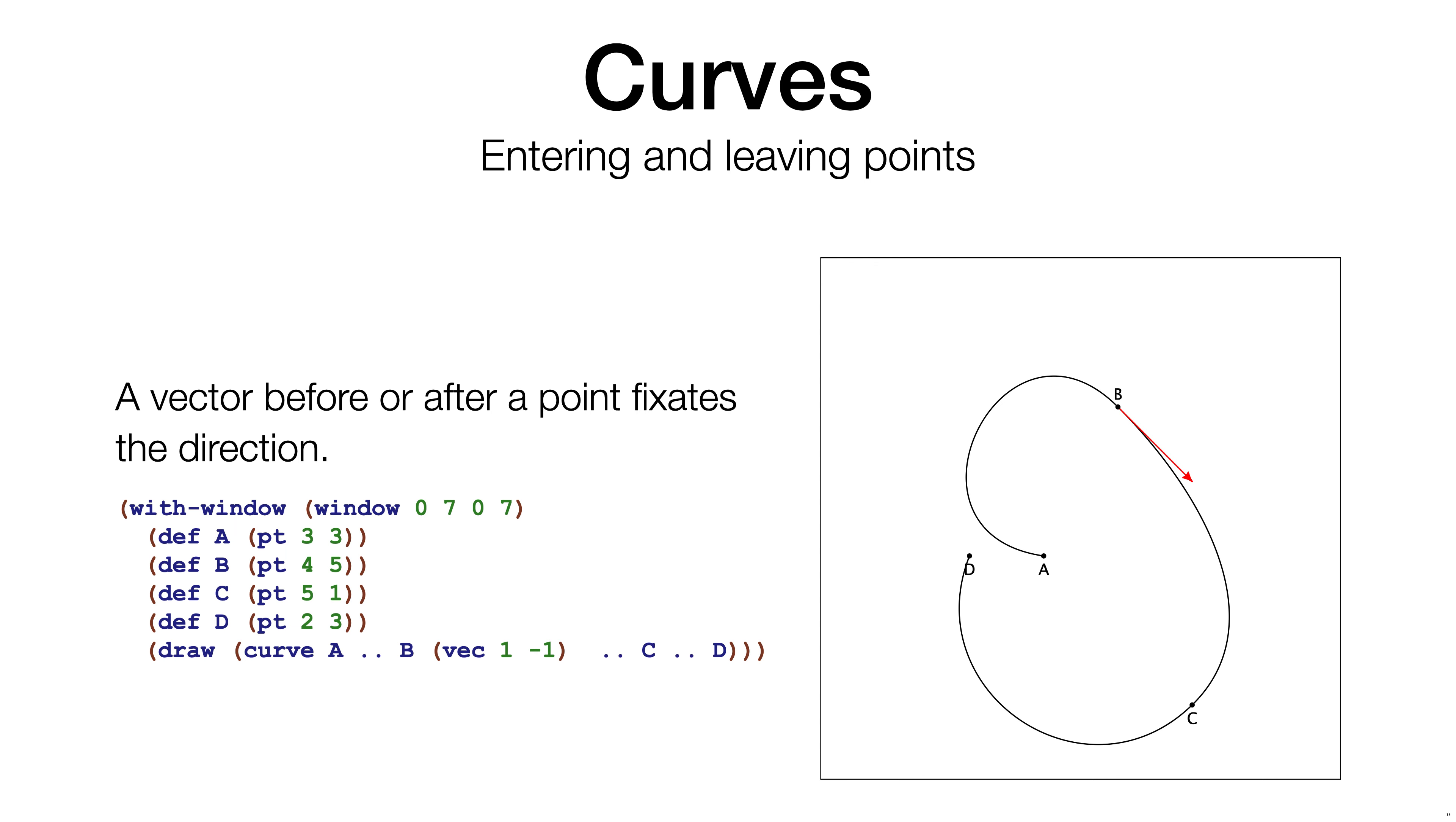In order to change how the pretty curve behaves, it's possible to add vectors before and after a point. In this example, we have added the vector 1, minus 1 after the point B.